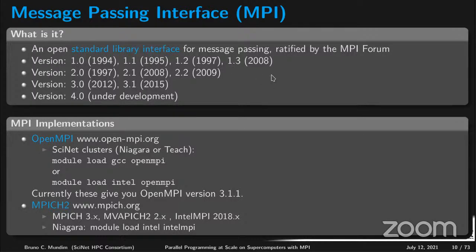There are several MPI implementations. The most important ones worth mentioning are Open MPI, which we have on our clusters and you can load with 'module load gcc openmpi', and MVAPICH2 used by the vendor — in our case Intel — to optimize for the hardware, loaded via the Intel MPI module. Open MPI is very good and we're going to stick with it during this class.